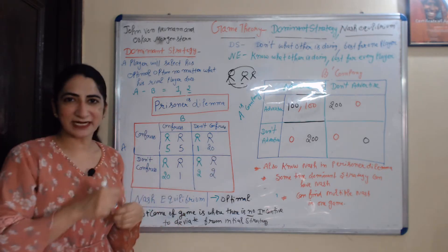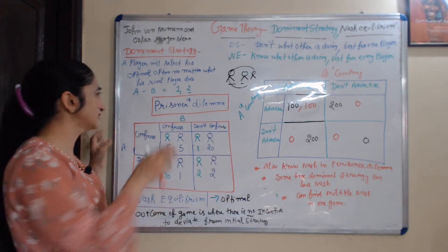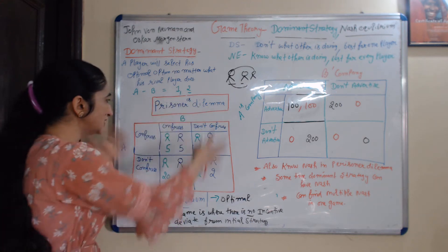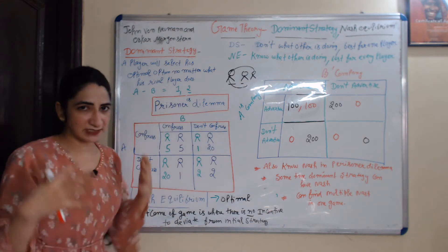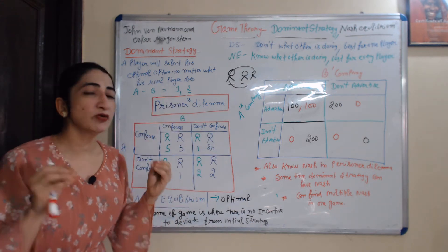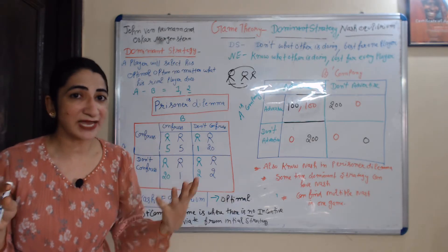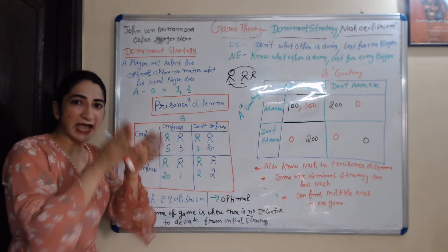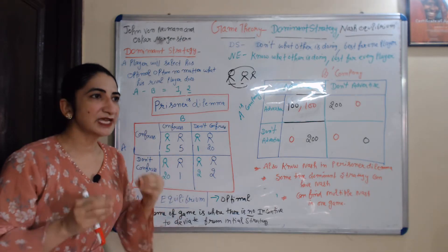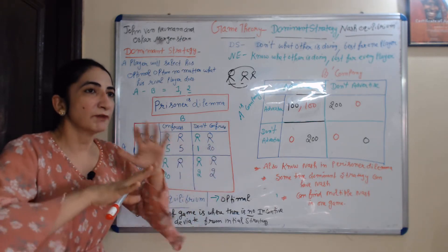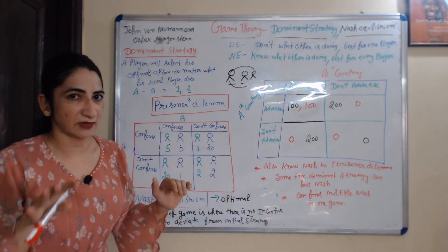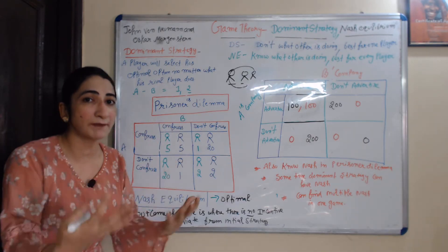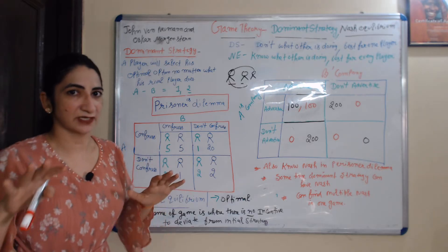We will understand dominant strategy with the help of the very famous example of game theory — that is the prisoner's dilemma. In a society, two persons committed a crime. A and B have both been sent to jail and are in separate lockups. Both cannot talk to each other.